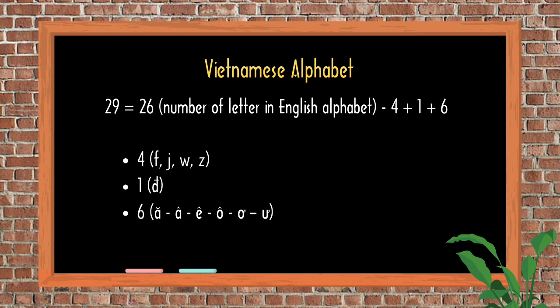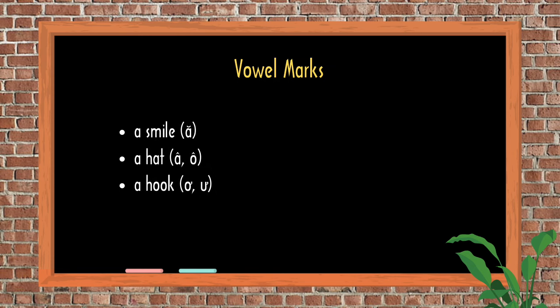There are also a handful of letters that are not present in the English alphabet — specifically one consonant and six vowels. I recommend you not try to remember all of them for now. Please note that the marks which appear on the vowels are not tone marks. You can simply call them vowel marks and there are only three of them: a smile, a hat, and a hook.